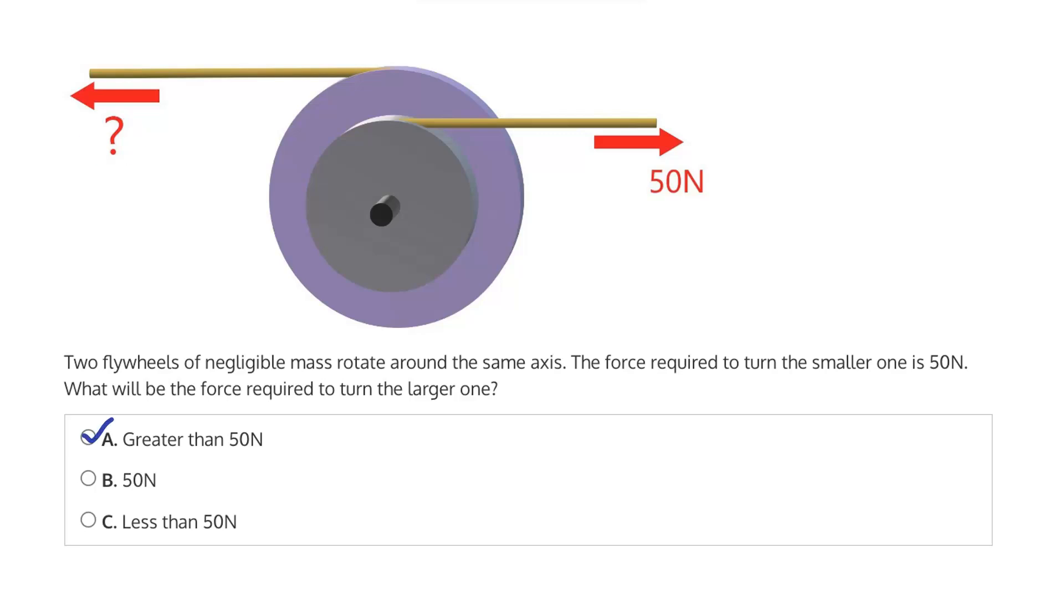Is it A, greater than 50 newtons, so more than what was required to turn the smaller flywheel? Is it B, 50 newtons, so exactly what was required for the smaller flywheel? Or is it C, less than 50 newtons?